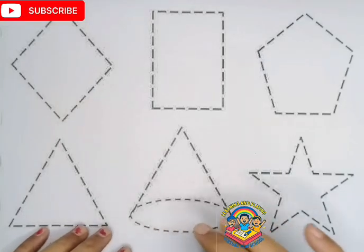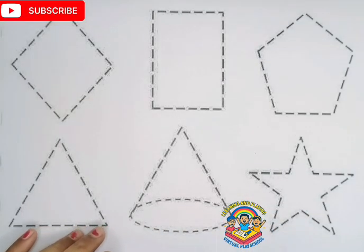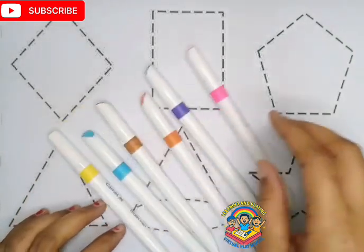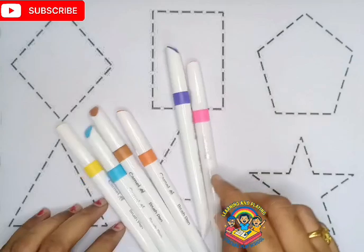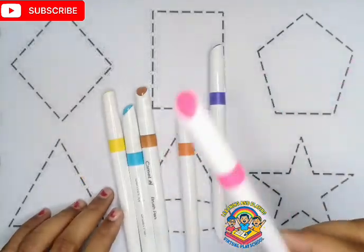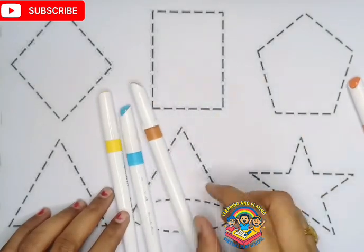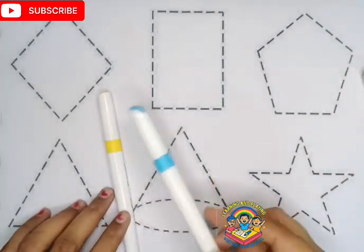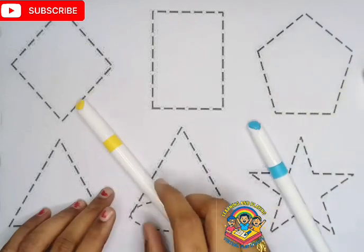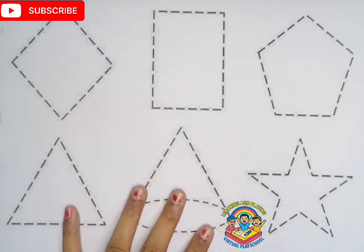Hi babies, welcome back to our channel. Today we are going to learn 2D and 3D shapes. Let's use these colors: pink color, purple color, orange color, brown color, sky blue color, and yellow color. Let's start the video.